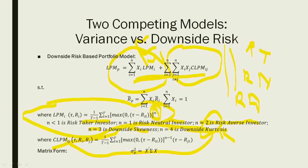We can use different proxies — variance only, skewness only, kurtosis only — or combinations like variance and skewness, variance, skewness and kurtosis, or skewness and kurtosis. We can put different weights on them. Similarly, we can add downside skewness and downside kurtosis in higher-moment versions.